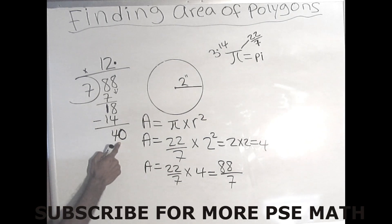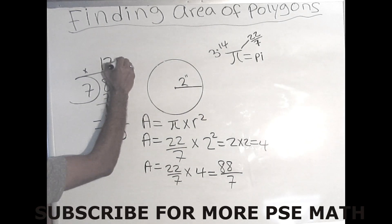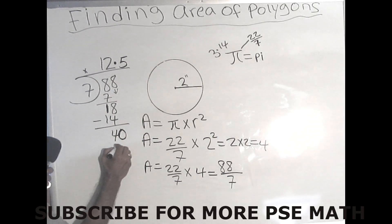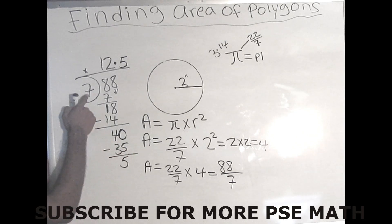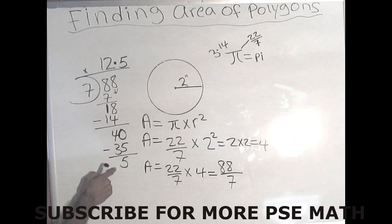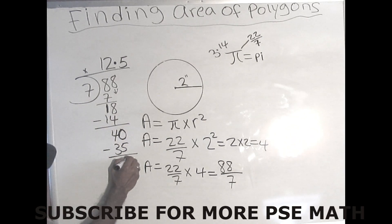And 7 could go into 40 five times. And 7 times 5 is 35. And when you minus 40 from 35, you're left with 5. Remember I said earlier that you stop at 2 decimal places. So you will not add decimal 2 times, but you will add another 0.